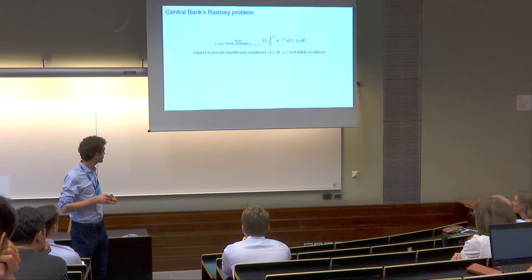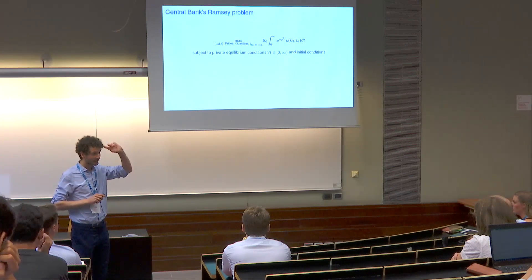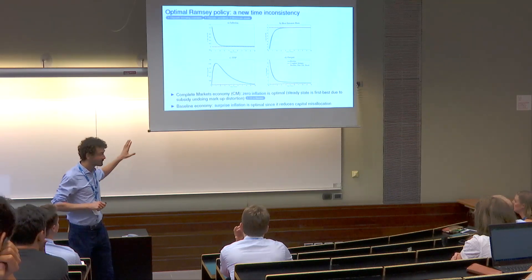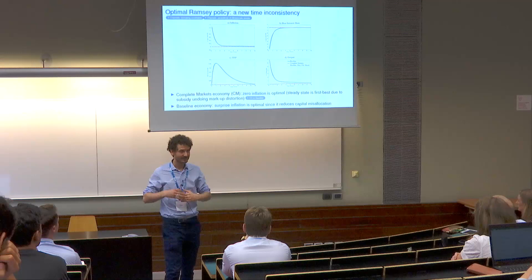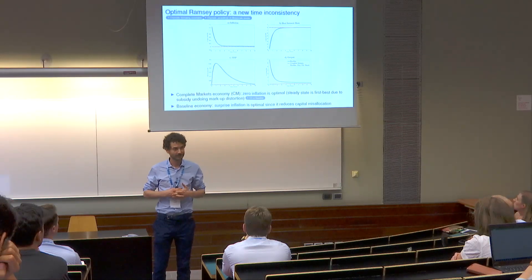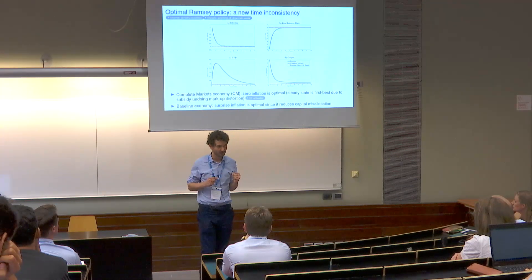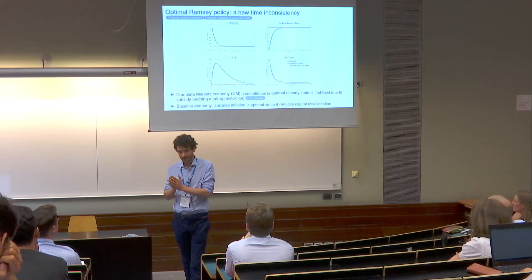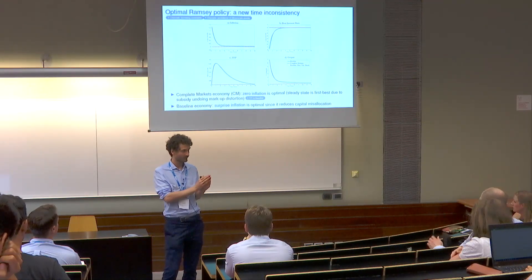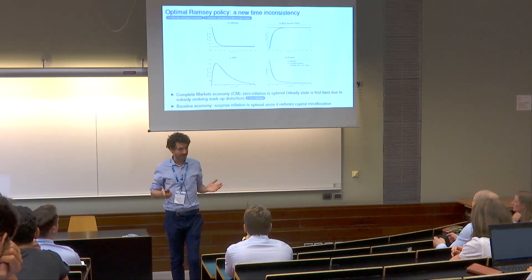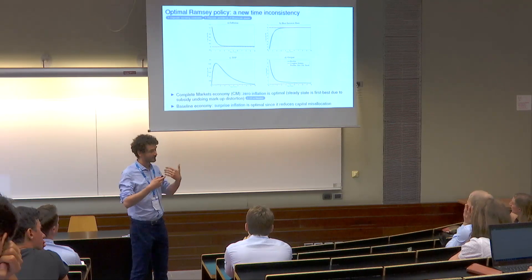Running a little behind, so jumping straight to optimal policy — Ramsey optimal policy. We show impulse responses to illustrate the transmission results. First, we do time-zero optimal policy starting at the steady state of the Ramsey problem, comparing the RANK economy — complete markets, the red line — with the HANK incomplete-markets economy, the blue line. In the RANK economy we have time inconsistency because we undo the steady-state markup with an appropriate tax or subsidy.